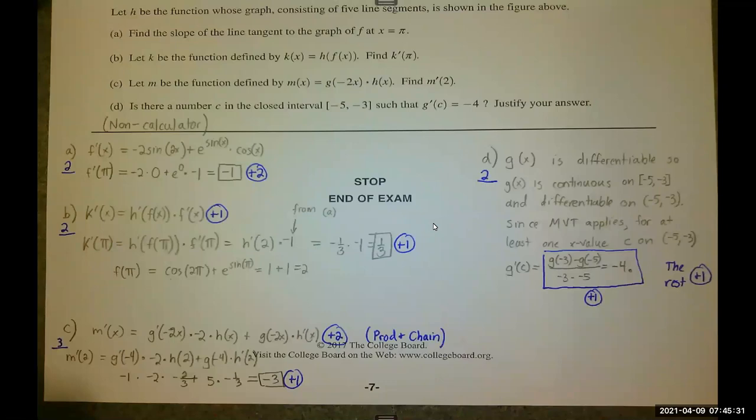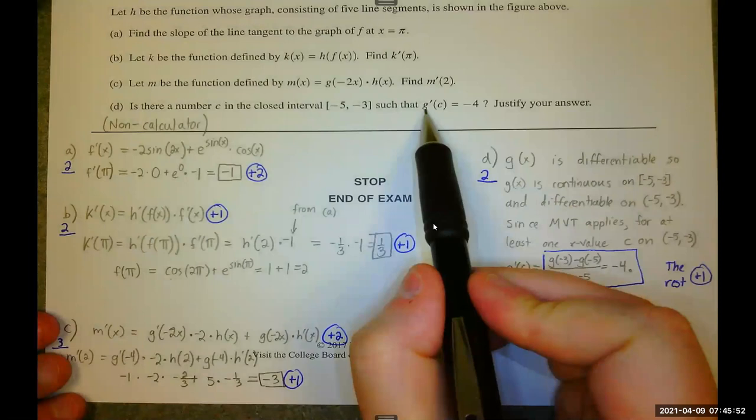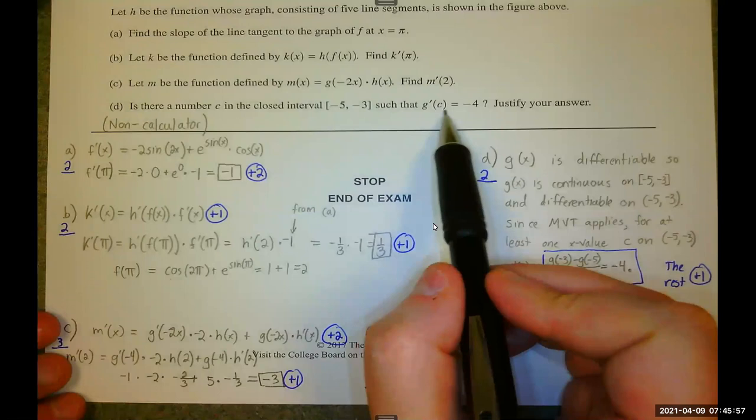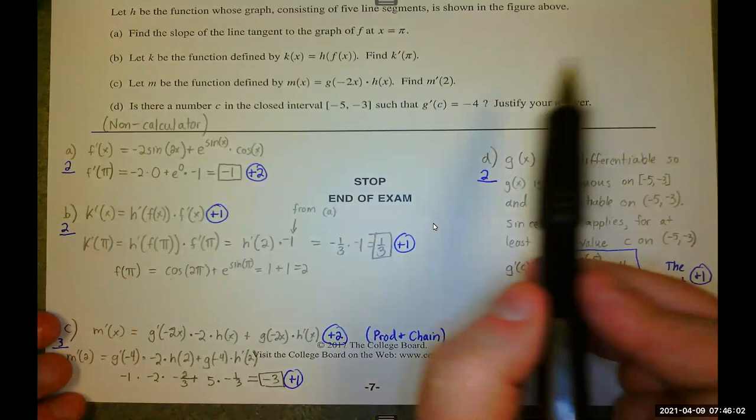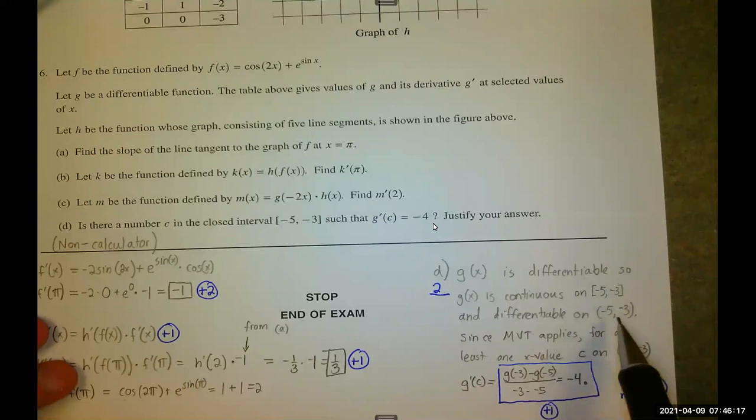Part D, is there a number C in the closed interval negative 5, negative 3? I won't guarantee, but I will say that a phrase like, is there this, does this thing exist, often indicates you're going to be using one of our favorite theorem friends. In this case, the mean value theorem. How did I know the mean value theorem? Because it's the G prime of C, which means I'm talking about the derivative of G, which means I would like G to be differentiable. And also, I gave it some thought. So I could have tried the intermediate value theorem.